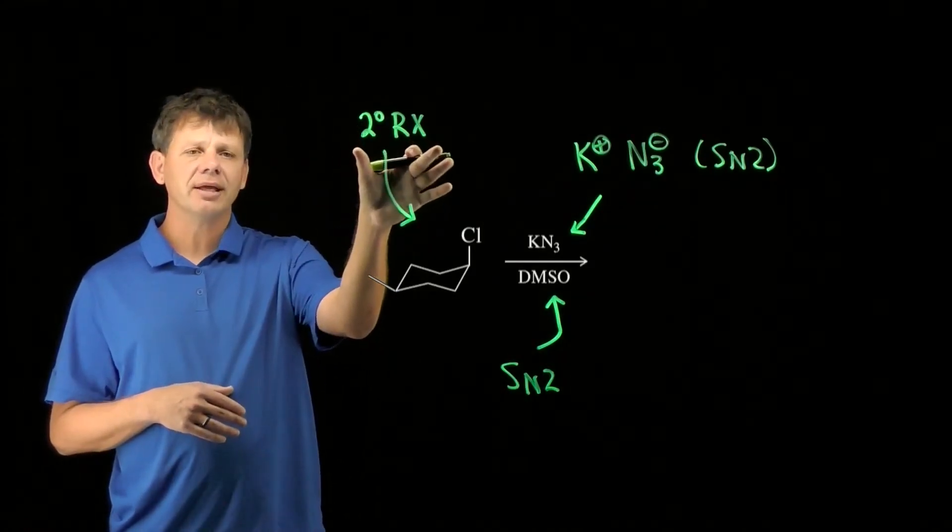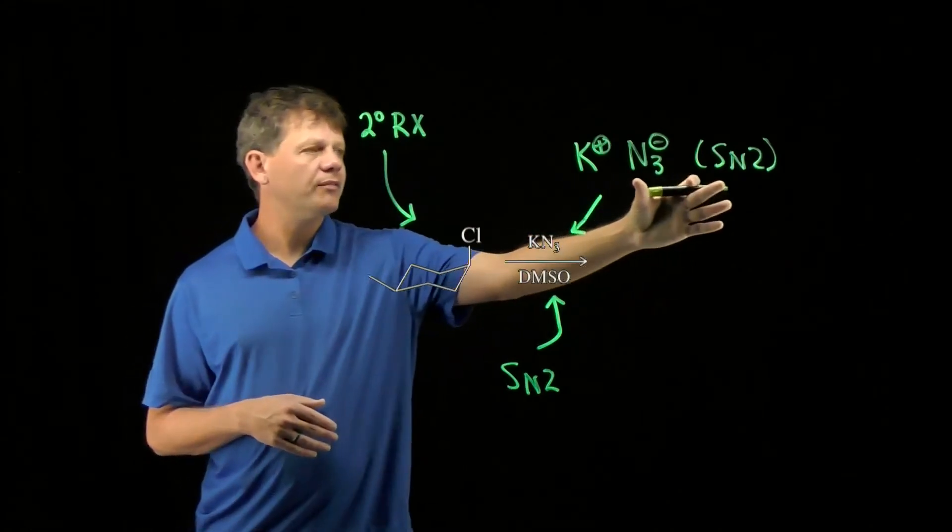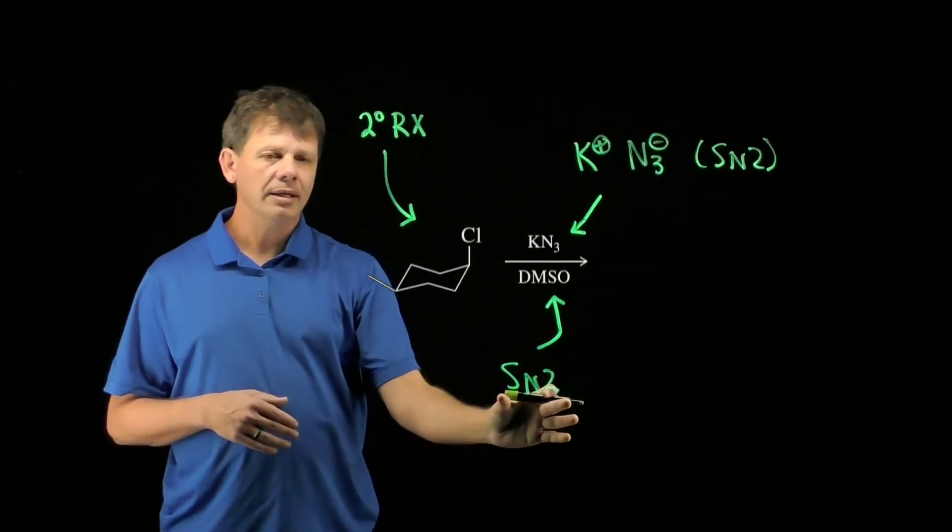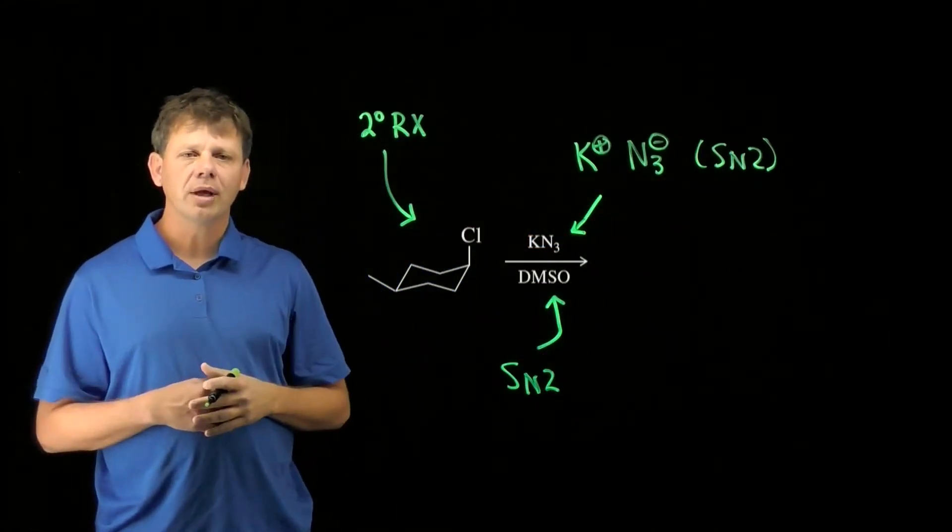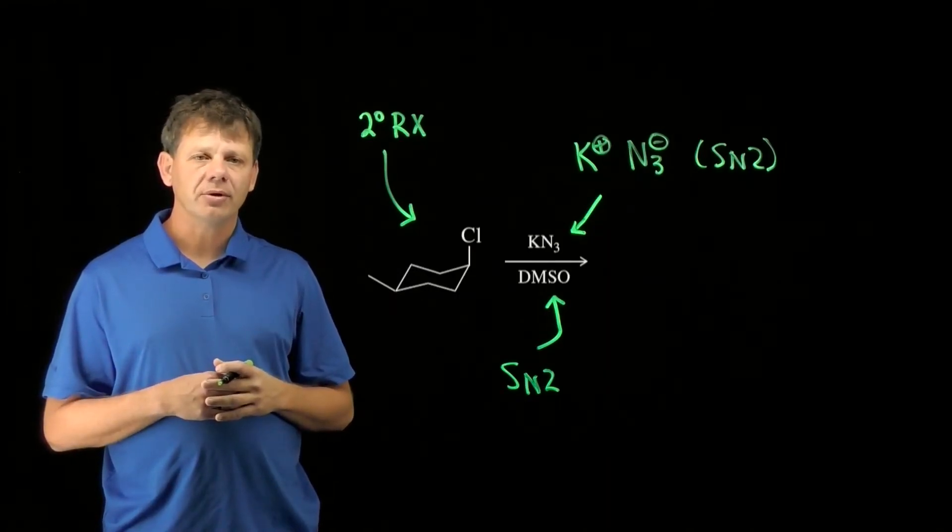With the secondary alkyl halide that can do either, a nucleophile that wants to do SN2, and a polar aprotic solvent that also wants SN2 to happen, that's going to be the result.